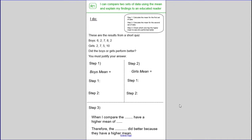Let's have a look at a question. These are the results from a short quiz. Boys got 6, 2, 7, 8 and 2. Girls got 2, 7, 5 and 10. Did the boys or the girls perform better? You must justify your answer. Remember the key word here is justify. You have to show all of your working out. So step 1 here is that we need to calculate the mean for the first set of data. So the first set of data in this case is the boys.